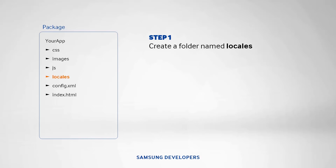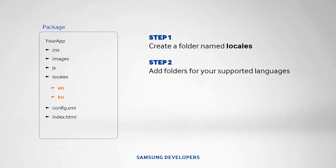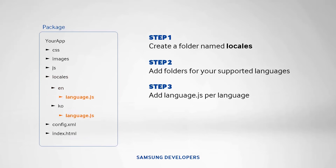In our example, we'll be showing English and Korean translations of our app. The second step is to add folders for our languages — EN for English and KO for Korean assets. For the third step, we should add language.js to our files. This will be a JSON file which contains the key-value pairs of our translated text.